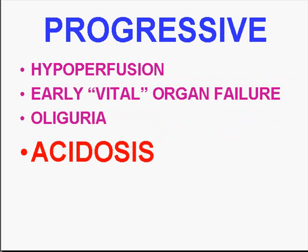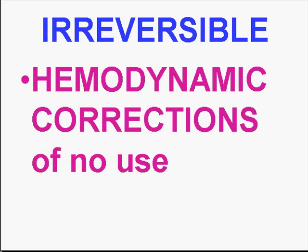When that fails, you get into a progressive phase of hypoperfusion of vital organs, manifesting as oliguria and acidosis because of inadequate tissue perfusion. In the irreversible phase, the hemodynamic problems are so severe they really can't be corrected. It may be a moral, ethical, or religious decision to differentiate the irreversible stage from the former two, but needless to say, this is the pre-death stage.